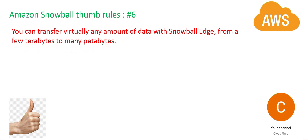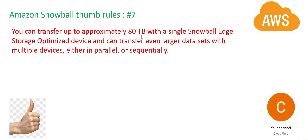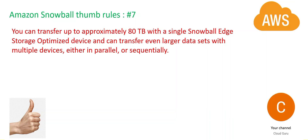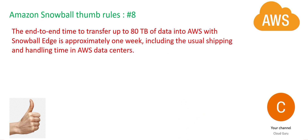You can approximately move 80 terabytes in a single Snowball Edge box. If you have 160 terabytes, that's 80 into 2 — order two such boxes. Always remember this: 80 terabytes per device. In the exam, they will give you some random figure like 130 terabytes and ask whether you can move it using Snowball. This is very important from an exam standpoint.